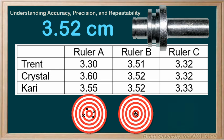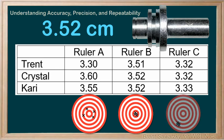Ruler C, using the target analogy, might look like this: we're grouping nicely, but around the wrong result.